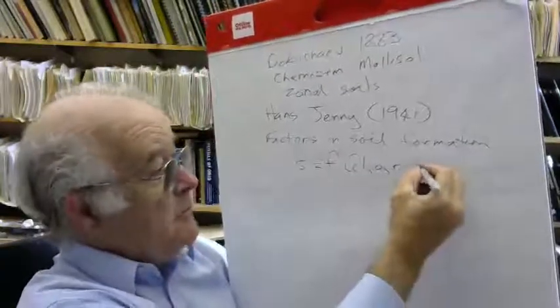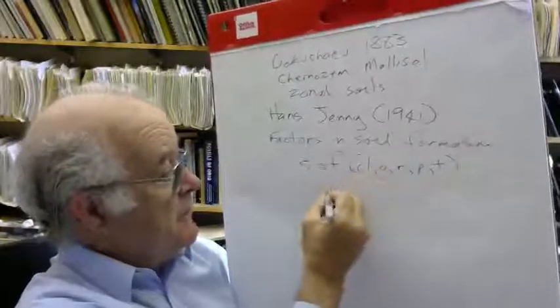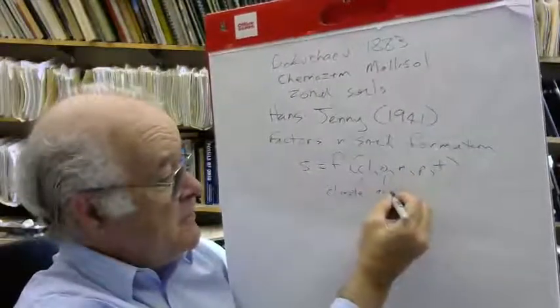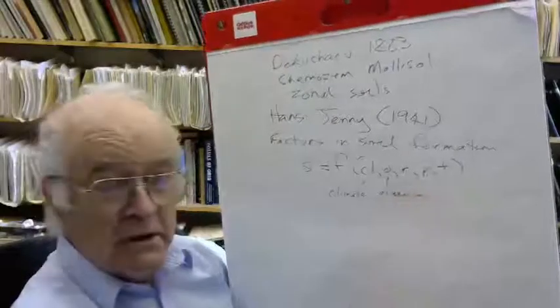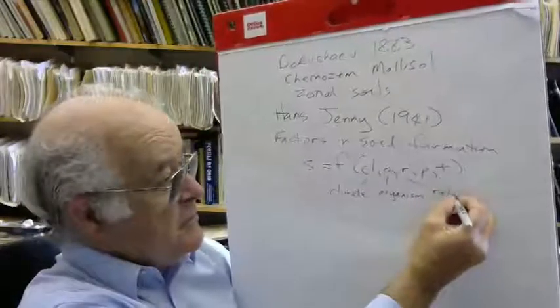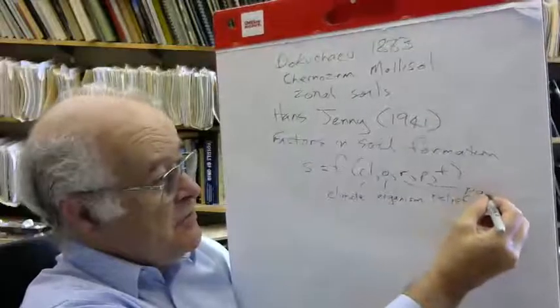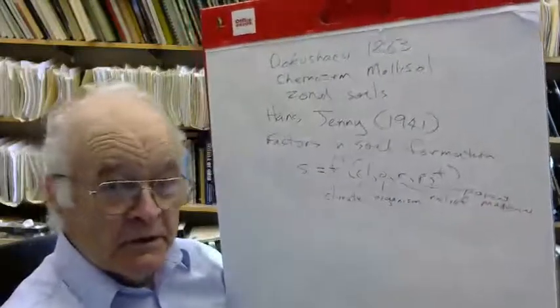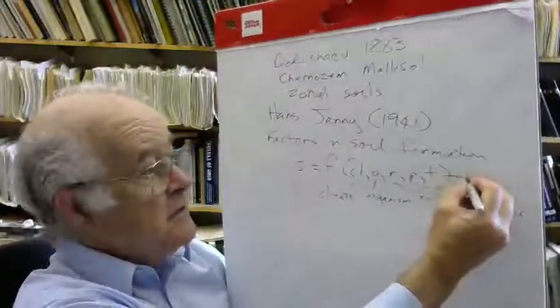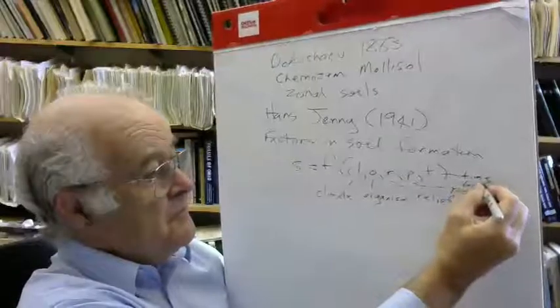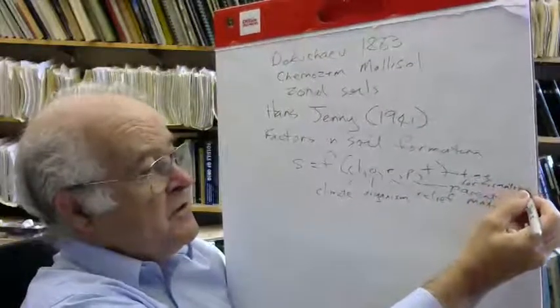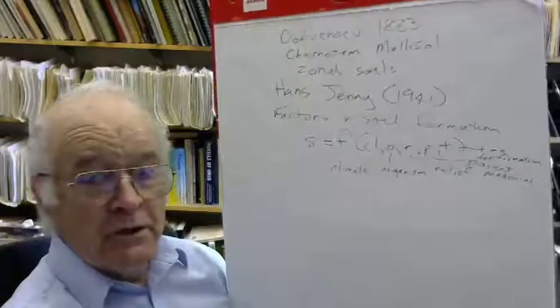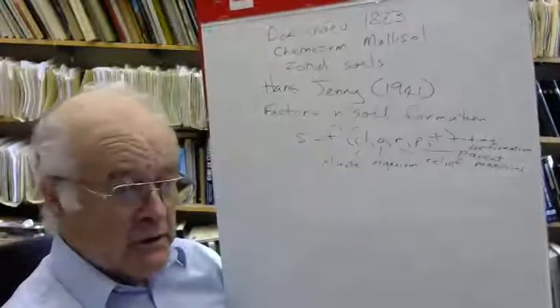Climate, organisms, topographic relief, parent material, and time. This is climate, the zonal soil concept which was very big in the Russian literature. These are organisms, the grasslands and marmots making the mollisol. This is relief, the landscape position. This is parent material, the material that was there to start with because soils develop on either sediments or bedrock. And this is time for formation, the duration of soil formation. A soil that had formed for a relatively short period of time would be not so well developed as one which developed for a long period of time.